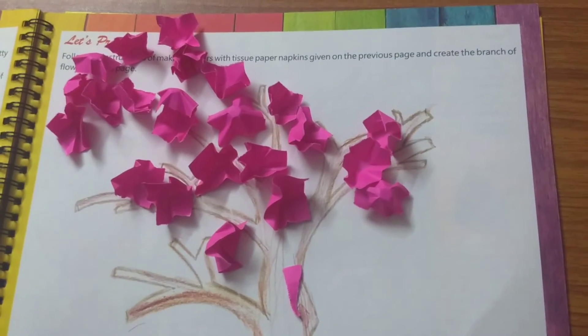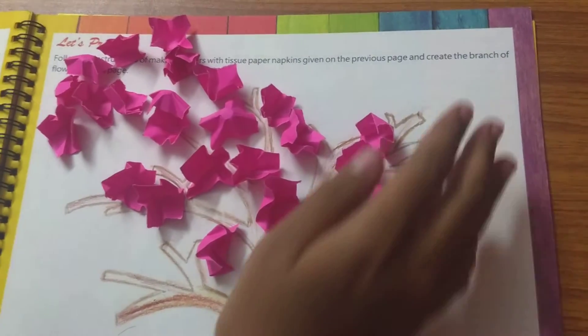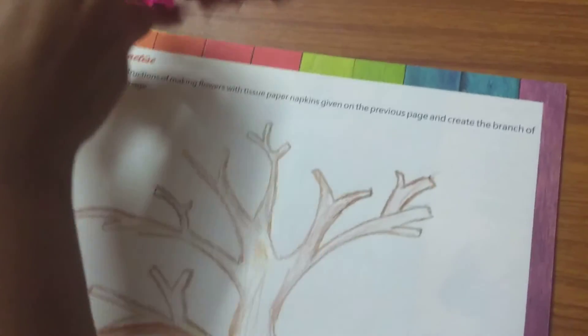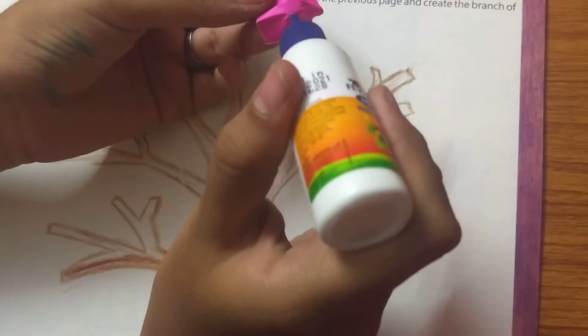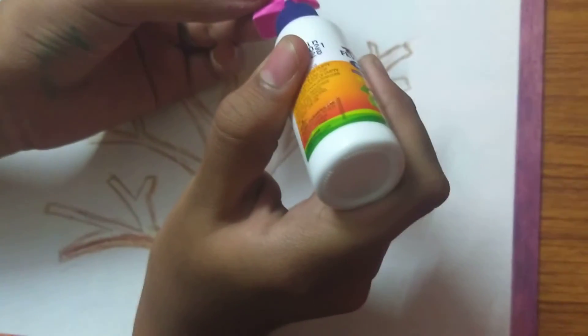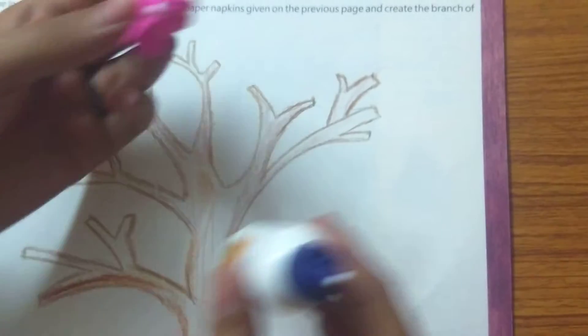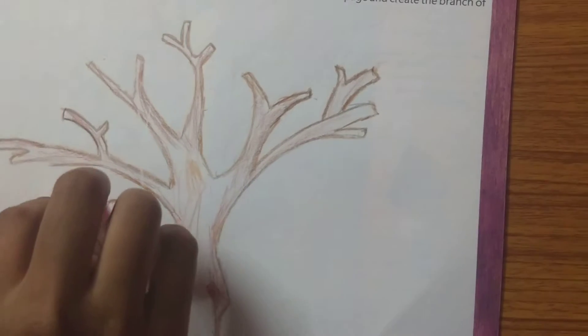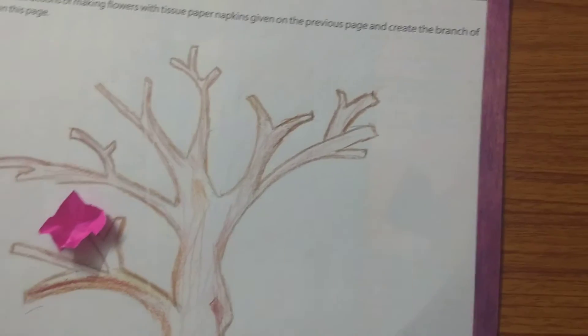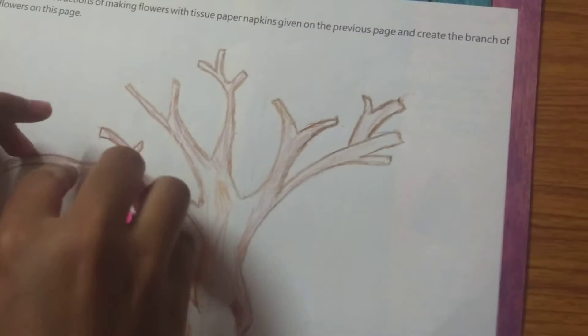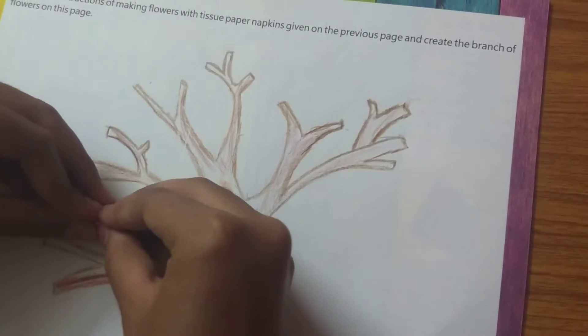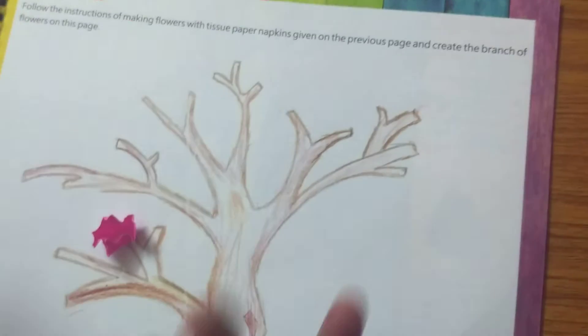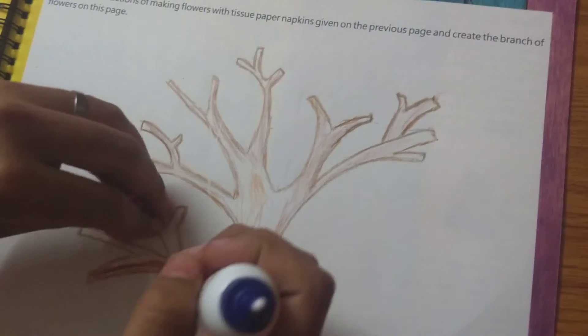Now take the glue. When you paste it, you will get it like this. Then paste and press it in the middle and again fold it so the flowers will soon open. So again press here.